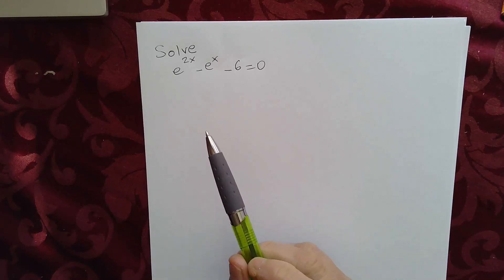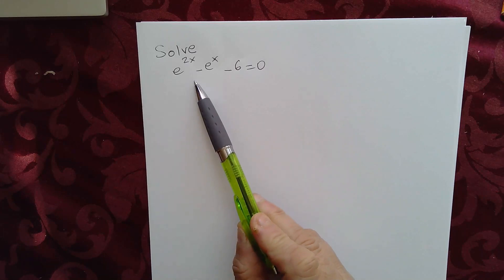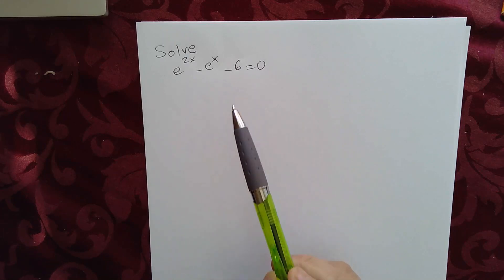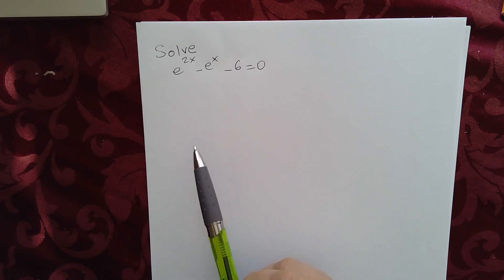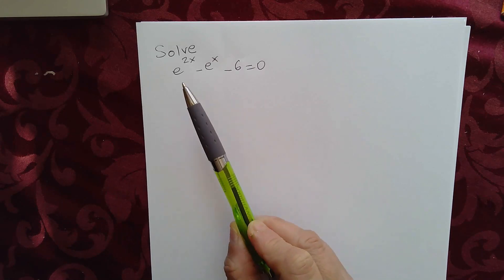Today we're going to solve this equation. We have e to the 2x minus e to the x minus 6 equal to 0. So here we have an exponential equation with a base e.